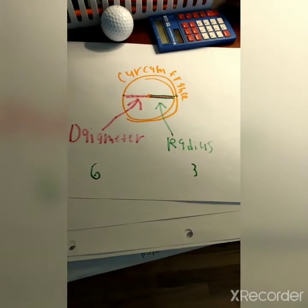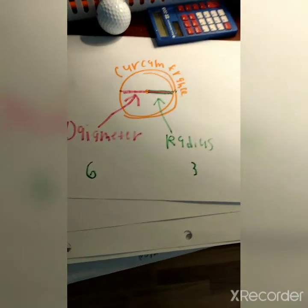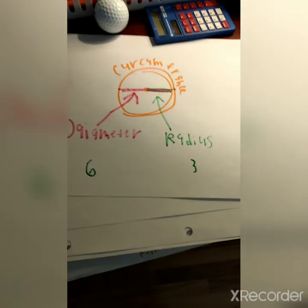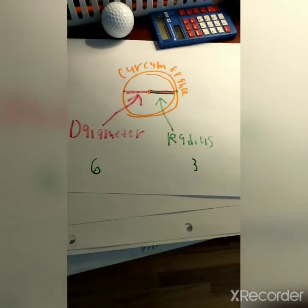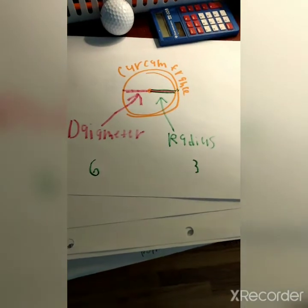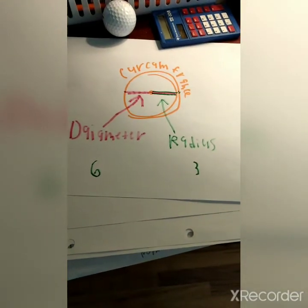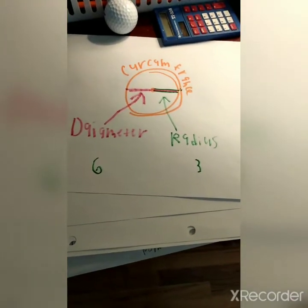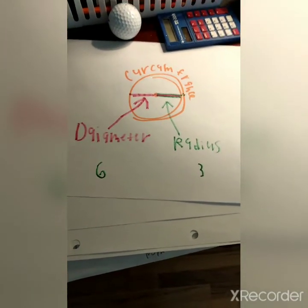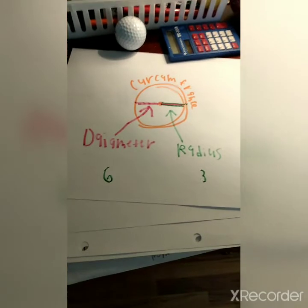Squidward is going to give SpongeBob a math problem, because SpongeBob violated a law, and Squidward wanted his lawyers to explain it.